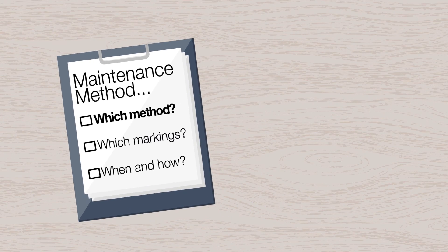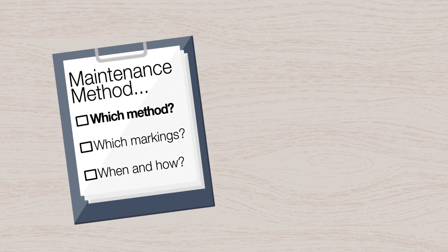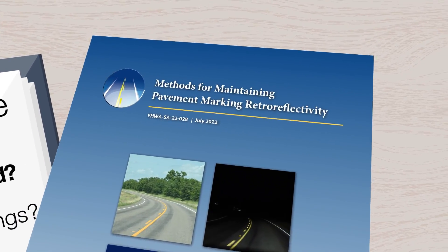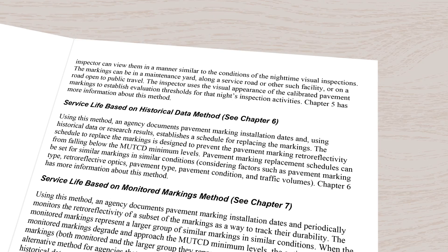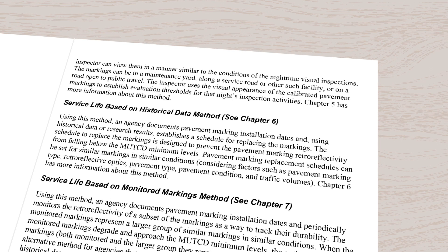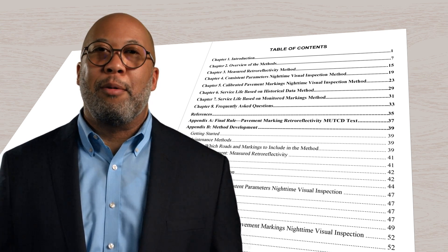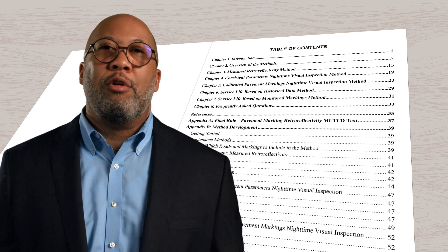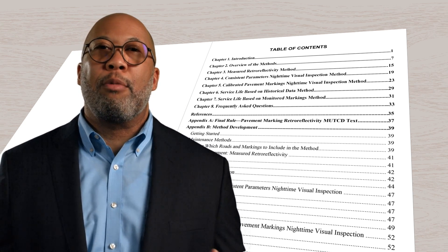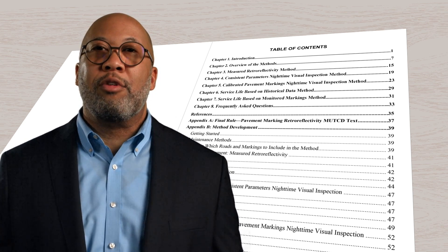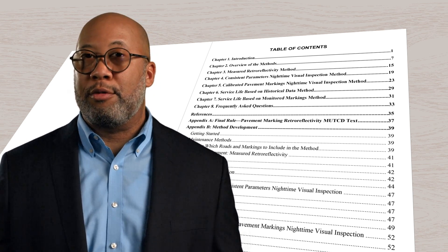The MUTCD recommends use of one or more of five methods covered in the FHWA publication titled Methods for Maintaining Pavement Marking Retroreflectivity. Each method is tied to minimum levels and has various needs for personnel, equipment, information, and data collection. A link to the publication is provided in the video description below. Agencies will use their selected method to identify which pavement markings are approaching minimum retroreflectivity levels and establish a plan or schedule to replace those markings before they reach minimum levels.